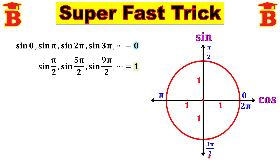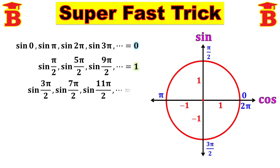On the negative side, the value is minus 1. The negative side angles are 3 pi by 2, 7 pi by 2, 11 pi by 2, etc. Therefore: sine(3pi/2) = -1, sine(7pi/2) = -1, and so on.